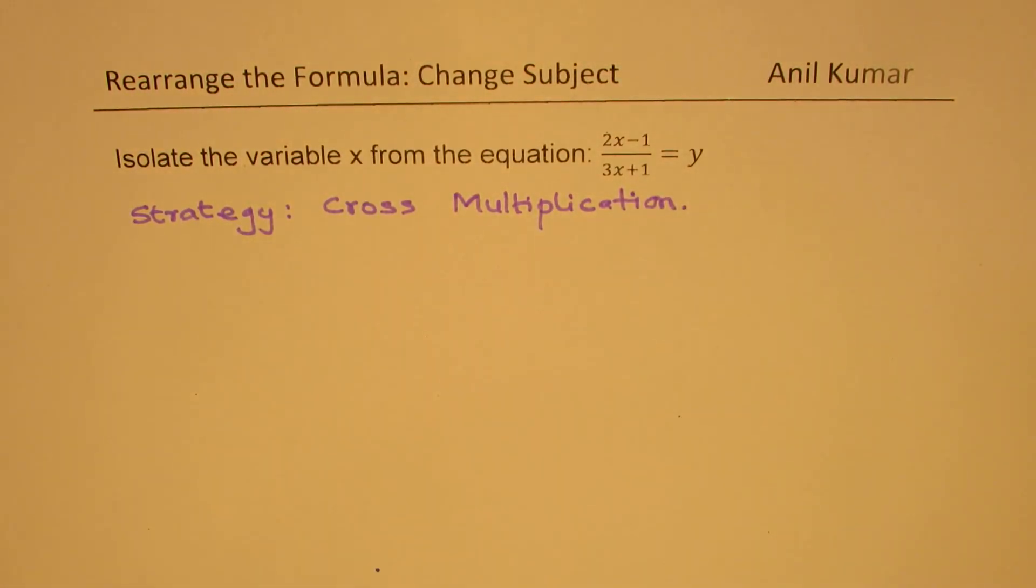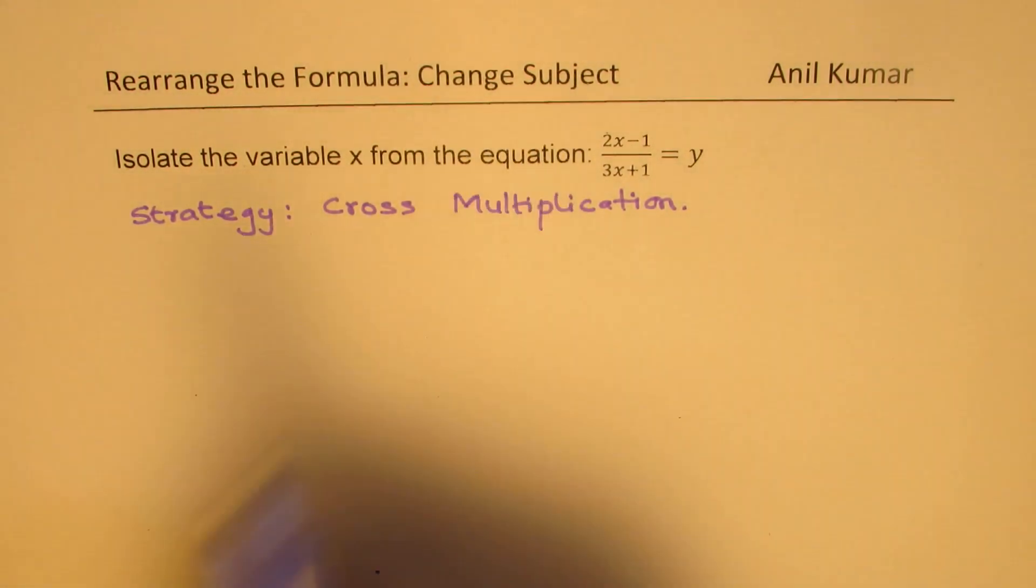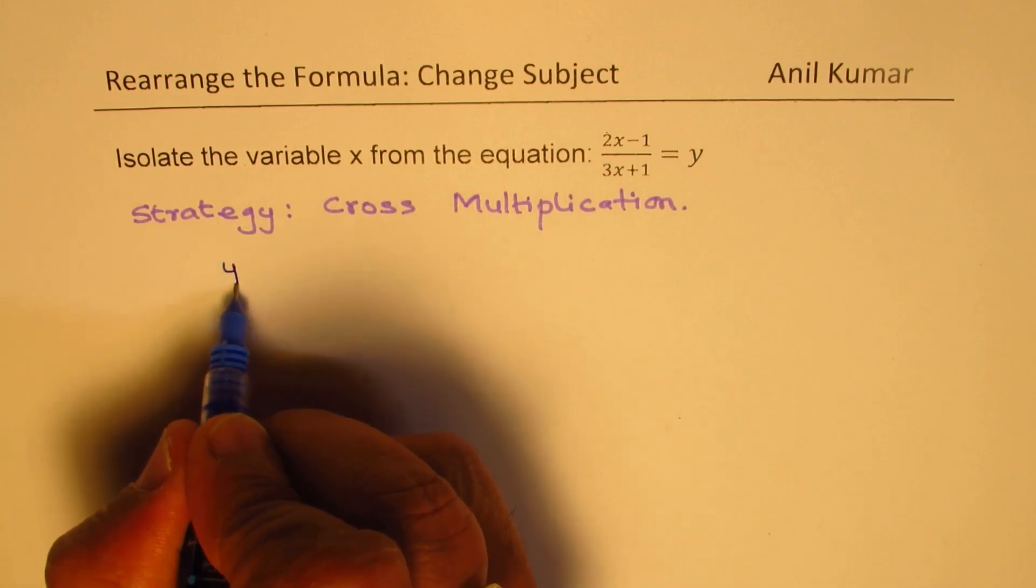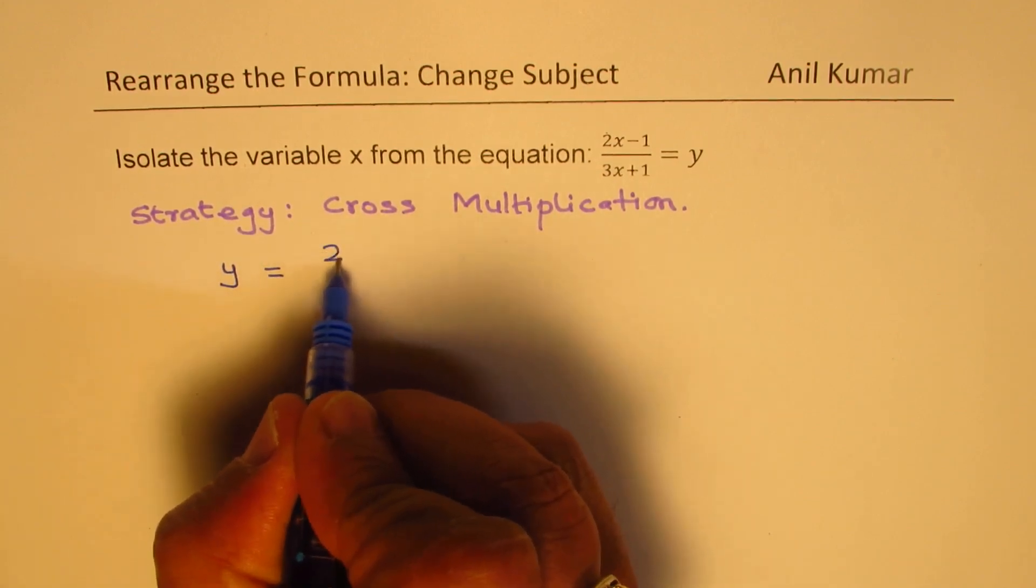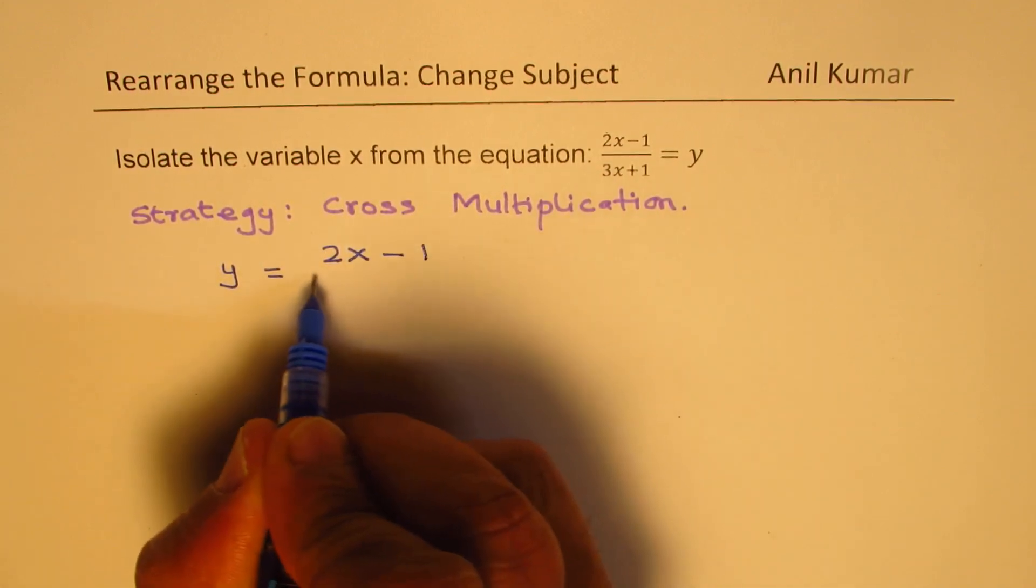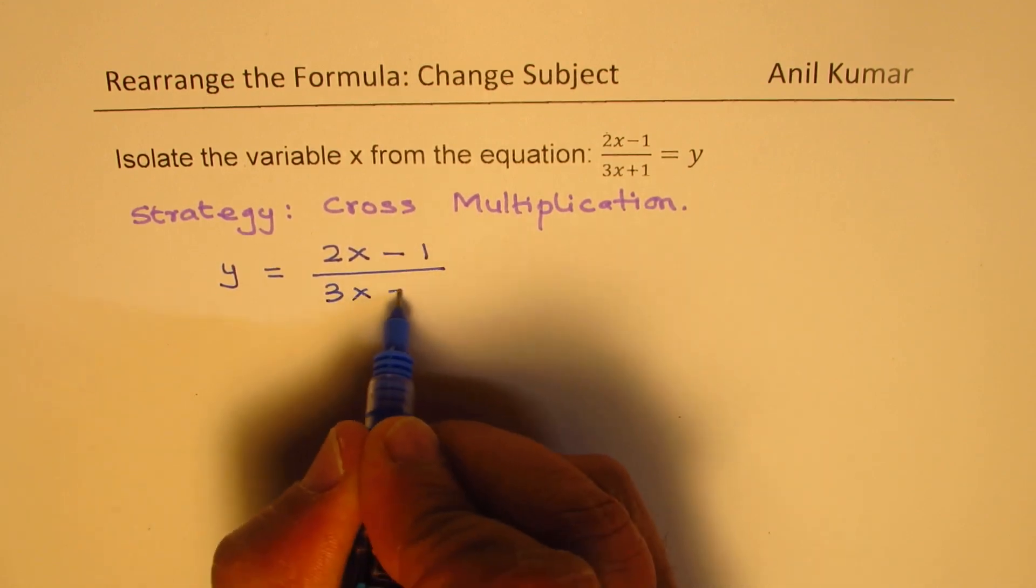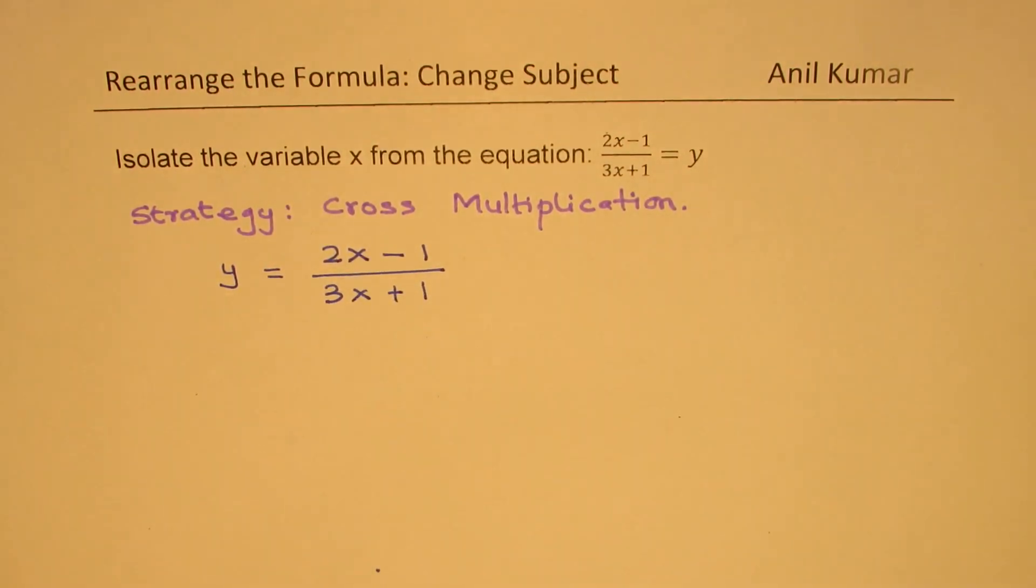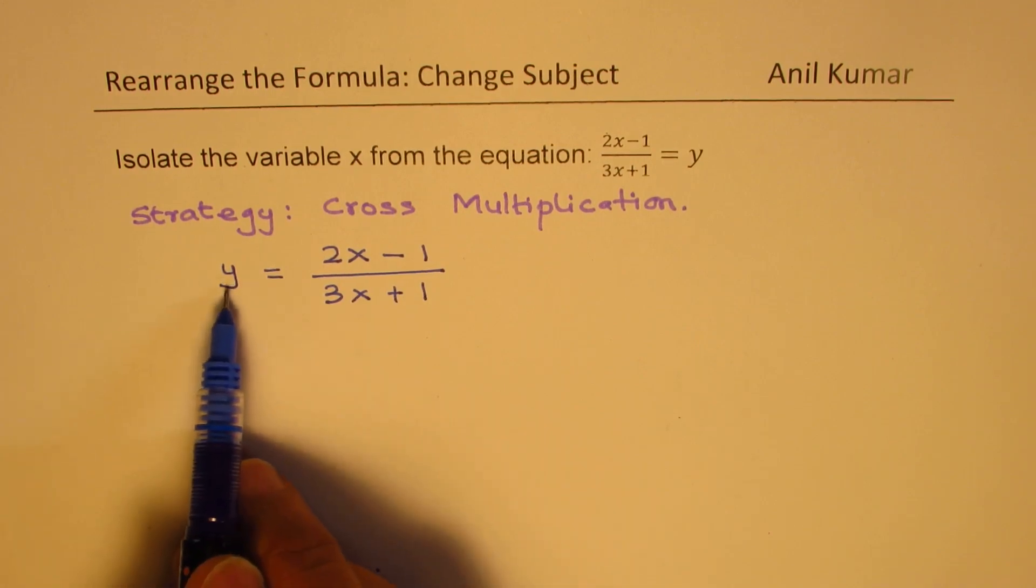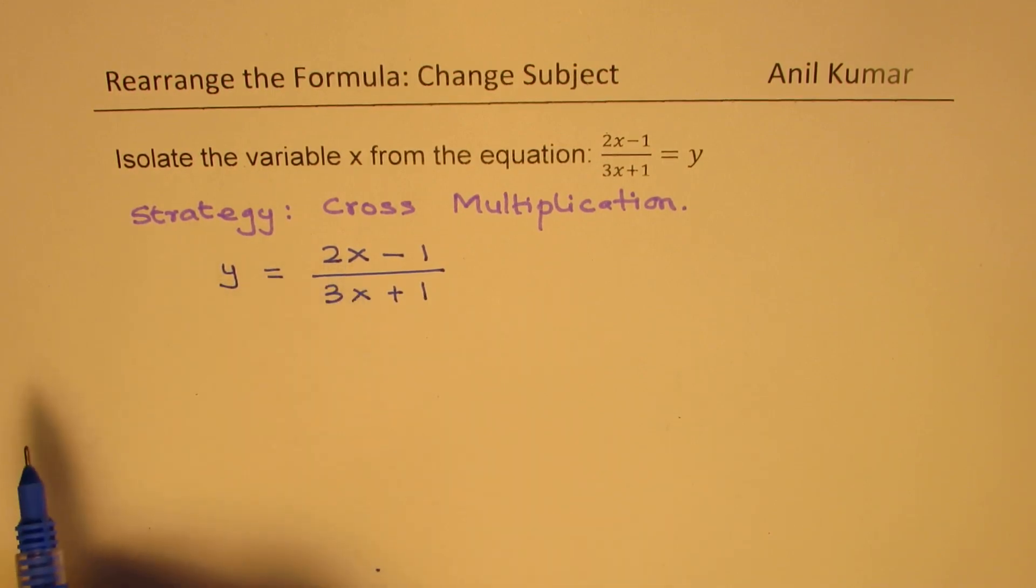Let's try to see how this strategy should be applied to isolate the variable or change the subject. So, when I write y equals 2x minus 1 over 3x plus 1, y is the subject. We want to change this to x. That is the whole idea.